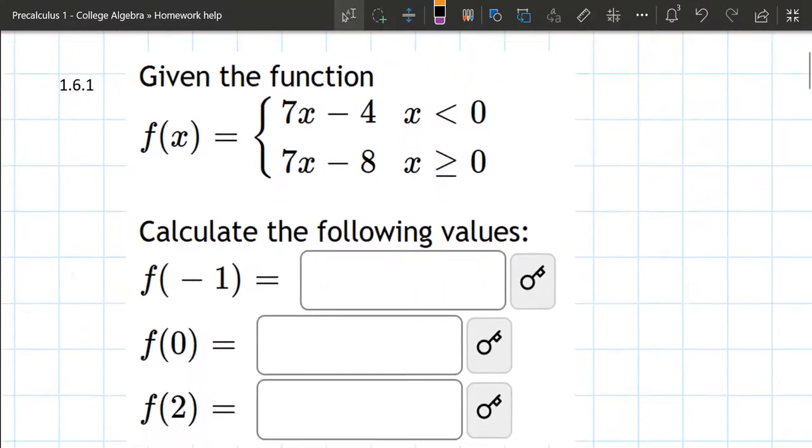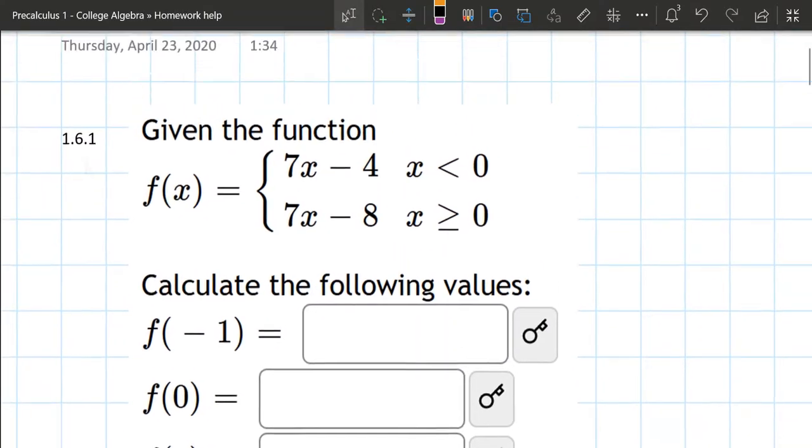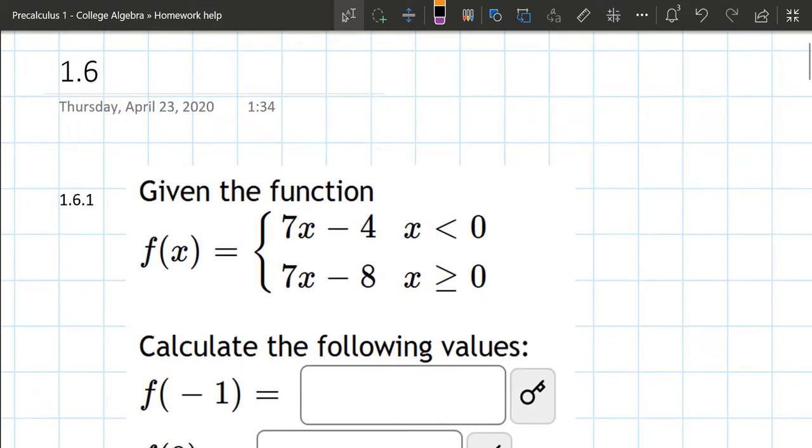We're going to look at a step function here and plug in some values. I'm going to label these steps. The first step is when x is less than 0, and I'll call this step 1. Then the other step we'll call step 2.